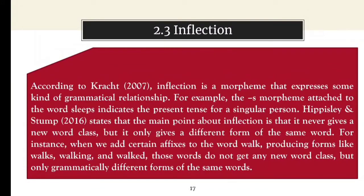Inflection. According to Clark, inflection is a morpheme that expresses some kind of grammatical relationship. For example, the -s morpheme attached to the word 'slips' indicates the present tense for a singular person. Heppisley and Stump state that the main point about inflection is that it never gives a new word class, but it only gives a different form of the same word. For instance, when we add certain affixes to the word 'walk', producing forms like walks, walking, and walked, those words don't get any new word class, but only grammatically different forms of the same word.